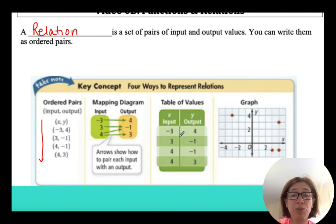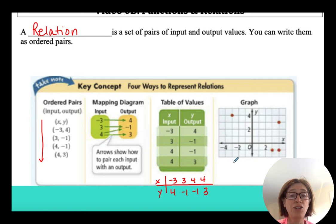You could also take ordered pairs and put them in a table of values. I do want to remind you table of values can go horizontally and vertically. And then I could also represent a relationship on a graph or a relation on a graph with some plotted points.